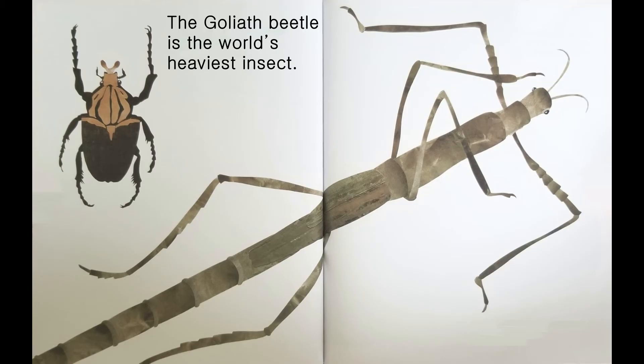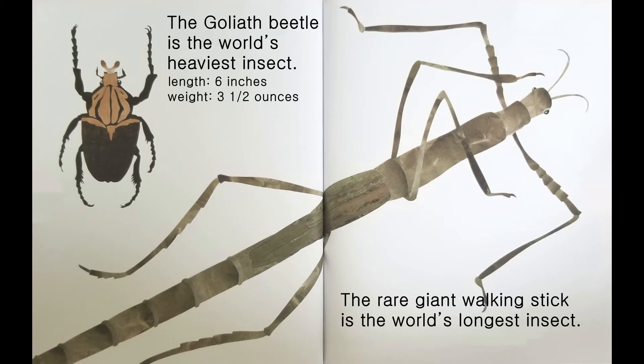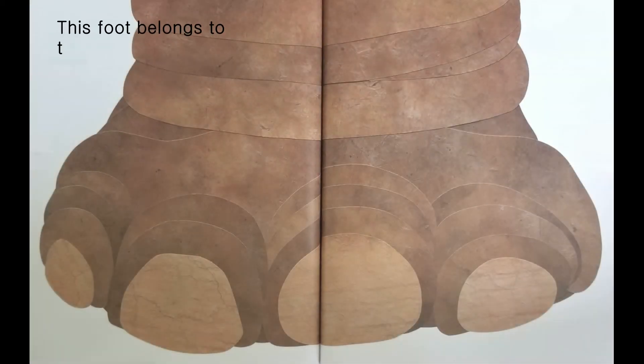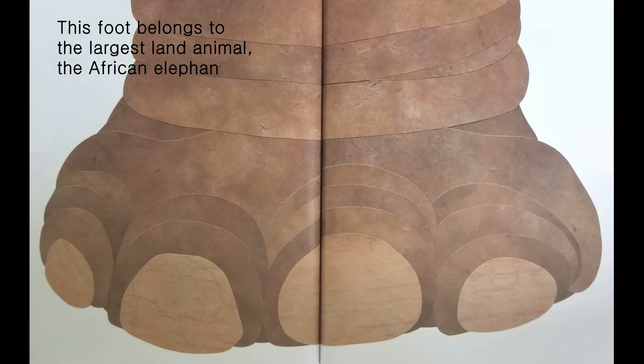The Goliath beetle is the world's heaviest insect. Length 6 inches. Weight 3 and a half ounces. The rare giant walking stick is the world's longest insect. Length 22 inches. This foot belongs to the largest land animal, the African elephant.